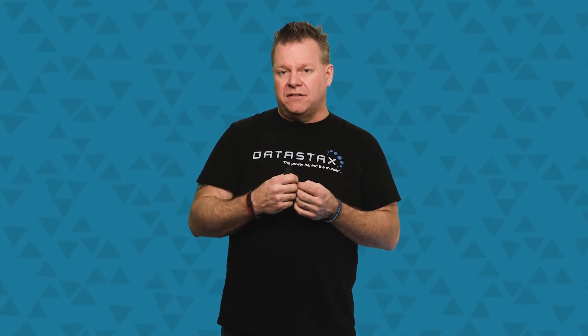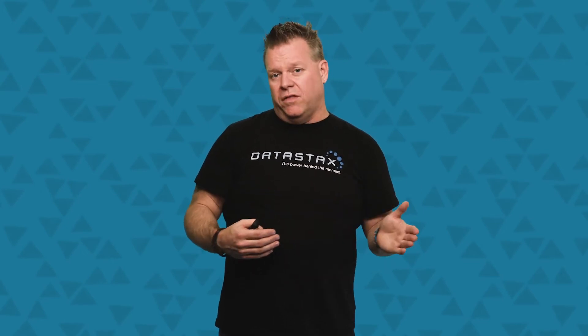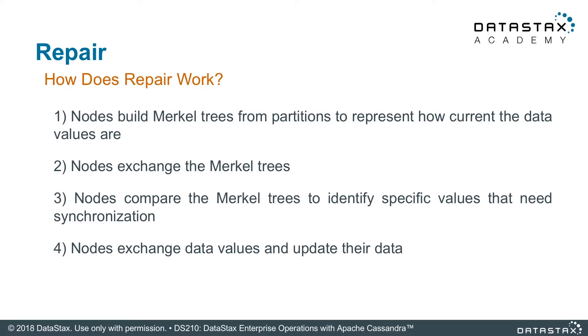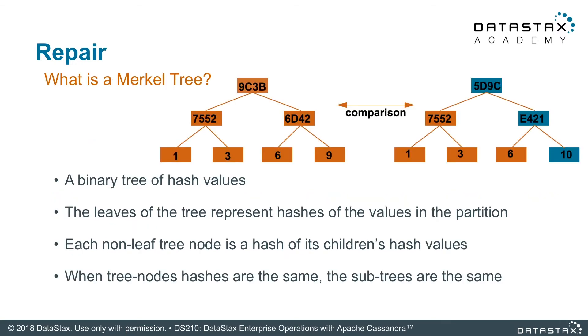How does repair work? There are a couple of stages. First, when one node approaches another and says 'let's check our consistency,' it creates what's called a Merkle tree. A Merkle tree is a data structure that shows all the differences between nodes — what data is missing on one node. Once the Merkle tree is created, it uses that to stream data from the correct node to the node that needs it. It's more or less a two-stage process: build the Merkle tree, then stream the data.